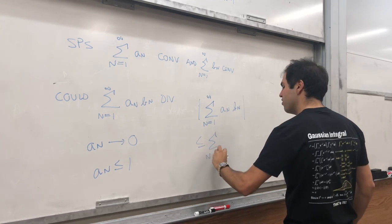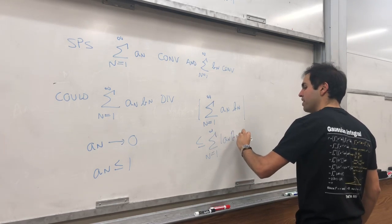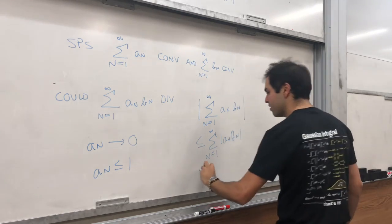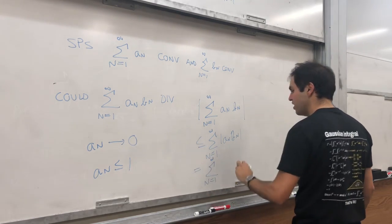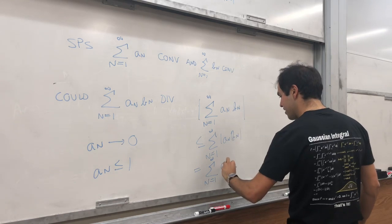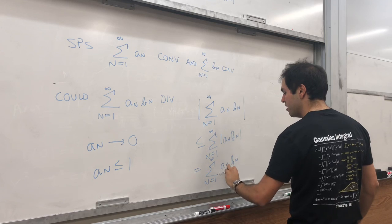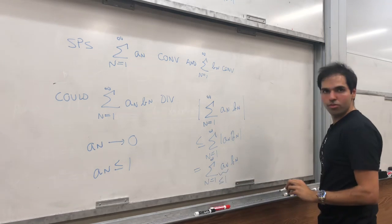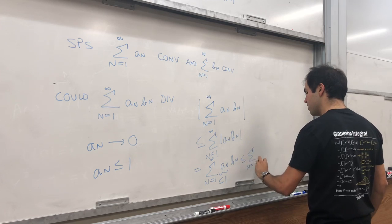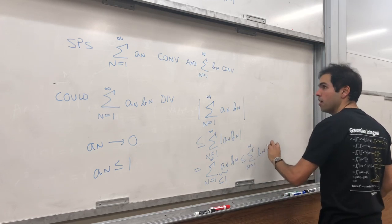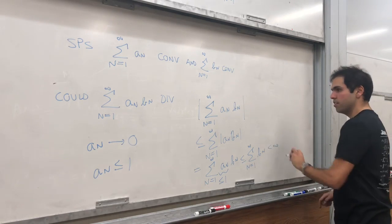That's less than or equal to the sum from one to infinity of absolute value a_n b_n. And that's the sum from one to infinity of a_n. Again, everything is positive, right? This is less or equal to one. And that's less or equal to the sum of b_n. But b_n converges. So, this is less than infinity.